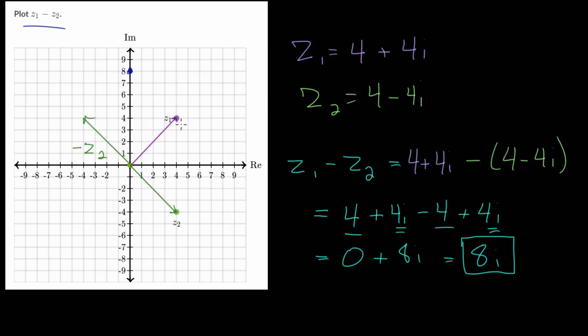Now we want to add this vector to Z1. We take this vector and slide it along Z1 so that its starting point is at the ending point of Z1. Starting at Z1, we go left 4 and then up 4. Our difference goes from the beginning of the original vector Z1 to the end of the opposite of Z2. You can see that would be at 8i. This is a nice visual way that we can check that we did our arithmetic correctly. To plot this point, it would be at 8i.